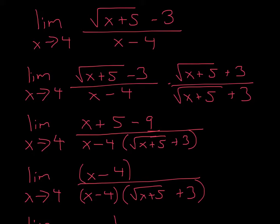The first thing you want to do when you see a limit problem is just plug it in and see if it works. That's called substitution, so you plug in 4. 4 plus 5 is 9, square root of 9 is 3, 3 minus 3 is 0. And then 4 minus 4 is 0, so it's 0 over 0.